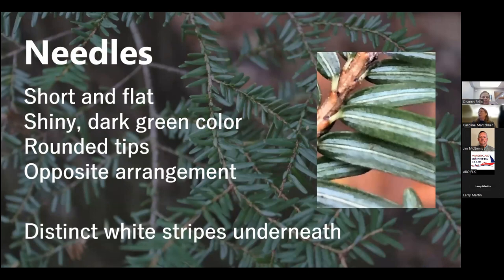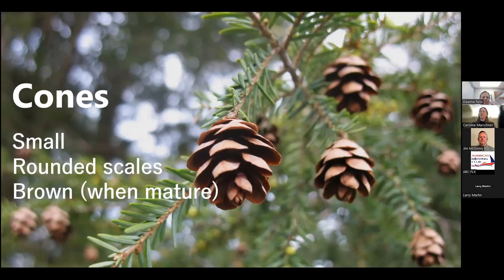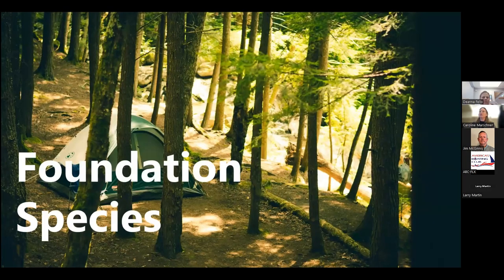There are the white stripes underneath, and the cones are small with rounded scales — brown when they're mature. The reason we're here talking about hemlocks is that hemlock is considered a foundation species, which means that it makes the ecosystem and a bunch of other species dependent on it.